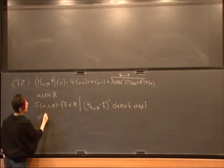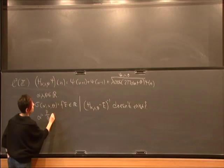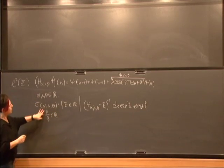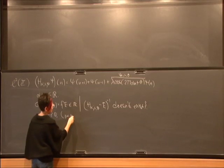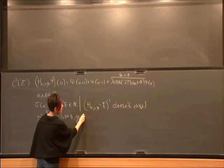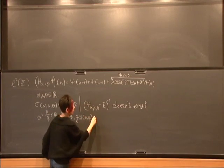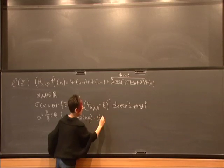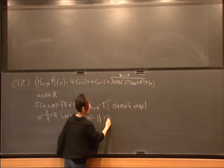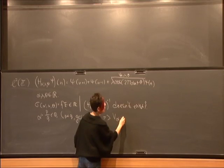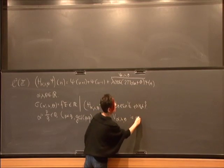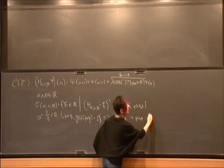If α is a rational number p over q, and I always will assume that p is smaller than q and that p and q are relatively prime, then the sequence V_αλθ is periodic of period q.